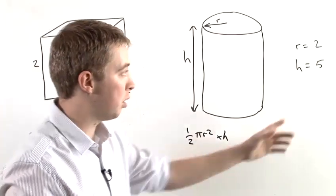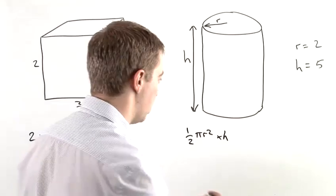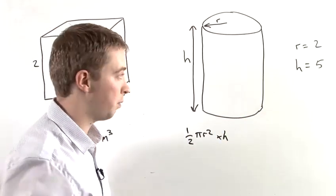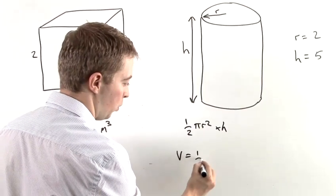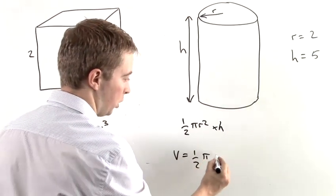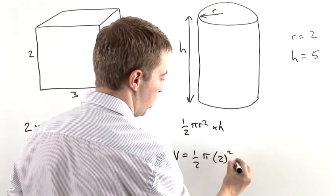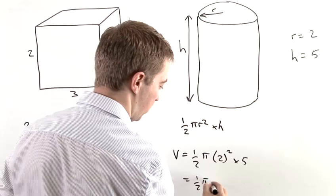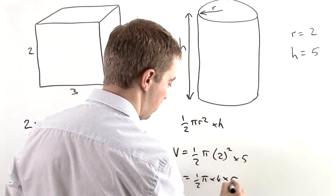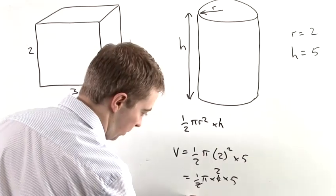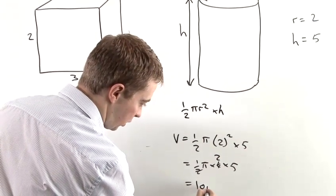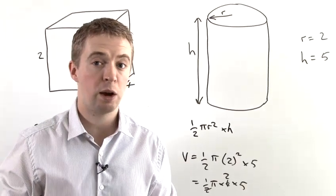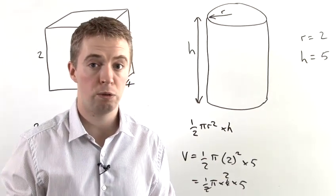So we've chosen a couple of simple dimensions. If we had a cylinder with a radius of 2 metres and a height of 5 metres, then the volume will be pi, multiplied by 2 squared, multiplied by 5, which is pi times 4 times 5. And that will give us 10 pi. And again, the units of that will be metres cubed. And that's how to work out the volume of 2 simple shapes.